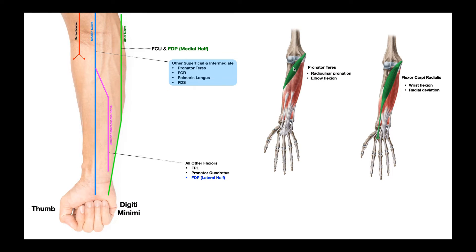Pronator teres is going to be mostly involved in radio-ulnar pronation, but because it crosses the elbow joint it can participate just a little bit in elbow flexion. Flexor carpi radialis is mainly going to be involved in wrist flexion and also radial deviation, as the name suggests.